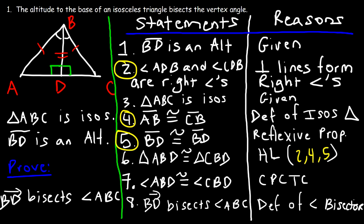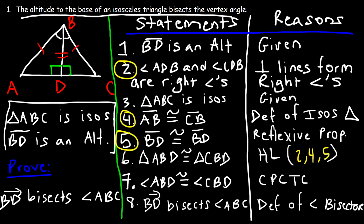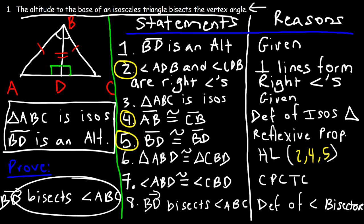That's all you have to do for a missing diagram problem. You might get a sentence and have to draw the diagram yourself. You have to come up with the given statements based on the information and identify what you're trying to prove. Once you can do that, it's a standard two-column proof problem.